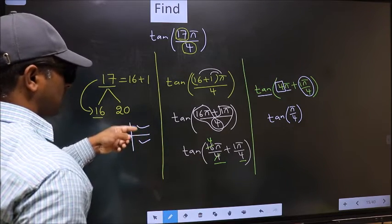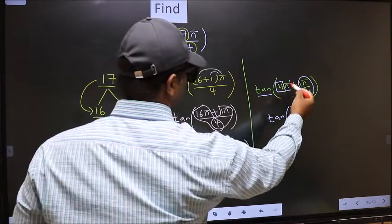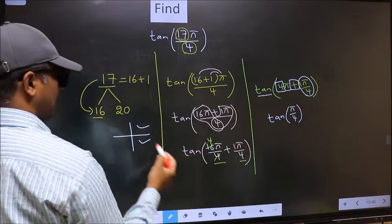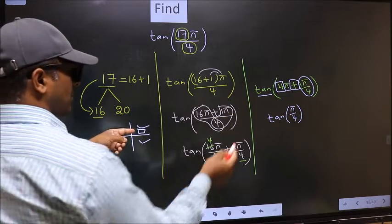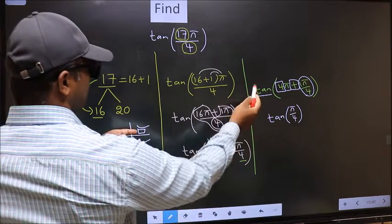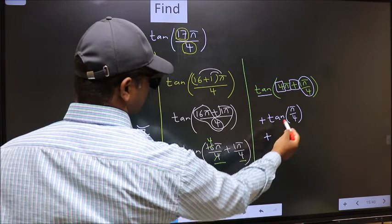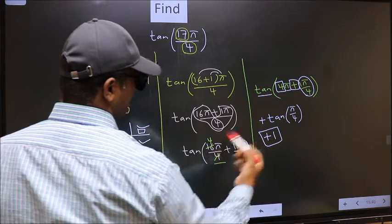So, now to select the quadrant, we should look at this symbol. Here we have plus. That means, angle lies in the first quadrant. And in the first quadrant, tan is positive. So, we should put plus. So, plus tan pi by 4 is 1. This is our answer.